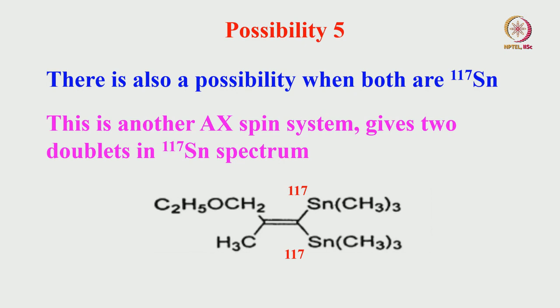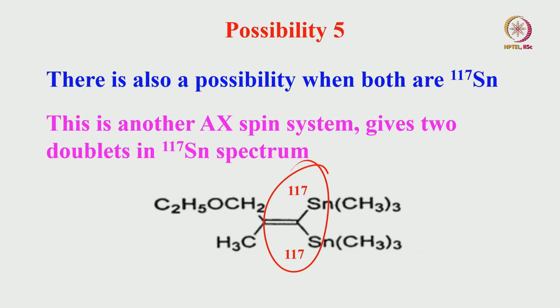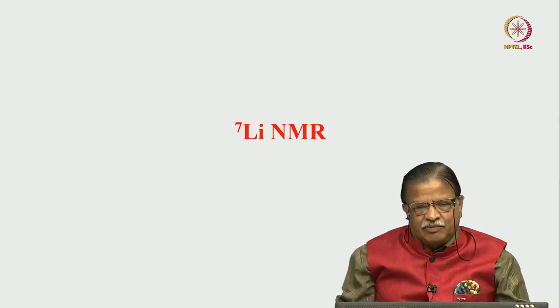Possibility five: both tins are Sn-117 — you would not see those peaks in the Sn-119 NMR because you need to go 8.3 MHz away to the Sn-117 resonance. Similarly, if one tin is Sn-117 and the other is C-13, those peaks also appear at the Sn-117 resonance. So every peak in this simple molecule can be assigned by considering all possible isotopomers.